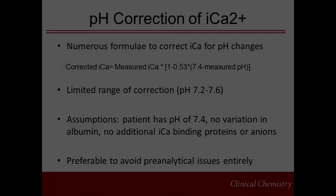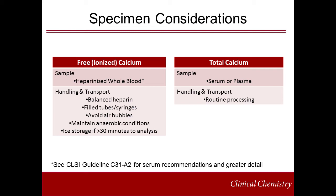In order to avoid pH changes during collection and transport and eliminate the need for correction, it is worth considering the specimen requirements for free calcium measurement. Heparinized whole blood is most commonly used for free calcium measurement. Whole blood samples should be collected in devices containing balanced heparin to avoid artificially lowering calcium concentrations due to chelation. Vacutainer tubes or syringes should be filled adequately to avoid dilutional effects of liquid heparin or excess calcium from balanced heparin. Air bubbles should also be avoided to minimize loss of CO2 and associated pH changes. Anaerobic conditions must be maintained to avoid pH changes which would affect the concentration of free calcium. Ice storage is appropriate for samples that will take longer than 30 minutes to analyze, where cooling the samples will minimize the effects of metabolic changes on pH.